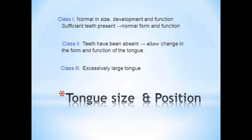Next is tongue size and position. House classified the tongue as Class 1 — normal in size, development, and function, with sufficient teeth present to give normal form and function. Class 2 is where teeth have been absent long enough to permit a change in the form and function of the tongue. Class 3 is where there is an excessively large tongue because all teeth have been absent for an extended period, resulting in abnormal development of tongue size.